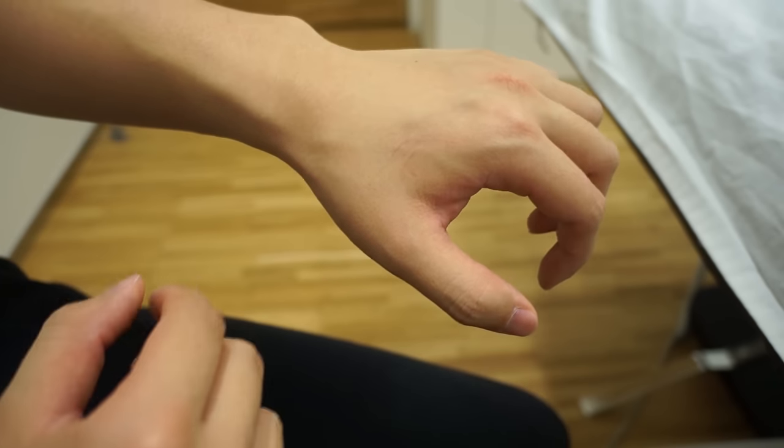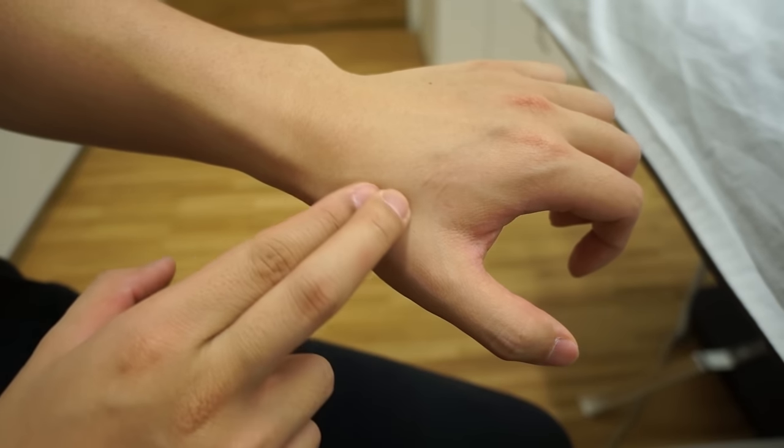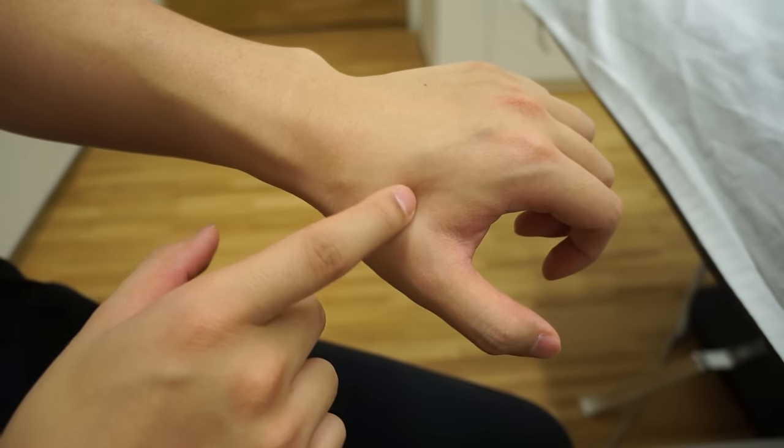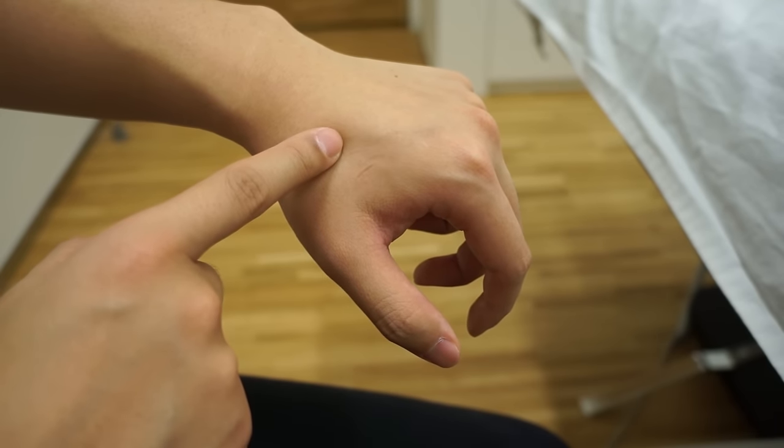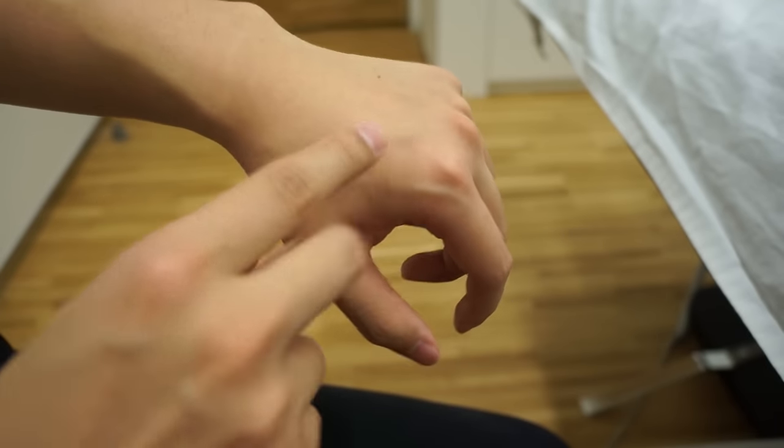This point is located in between the junction of the thumb and index finger. The second bone of the hand resembles the entire spine.